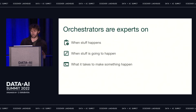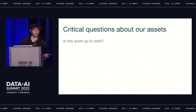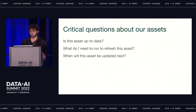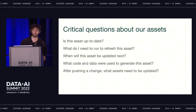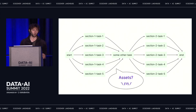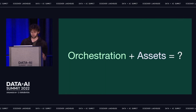This makes orchestrators the natural experts on a few topics: they know when stuff is going to happen, when stuff has happened, and what it takes to make something happen. Because they're the experts on these topics, they hold the key to answering some of the most important questions we end up having about our assets — for example: Is this asset up to date? What do I need to run to refresh this asset? When will this asset be updated next? What code and data were used to generate this asset? And after pushing a change, what assets need to be updated?